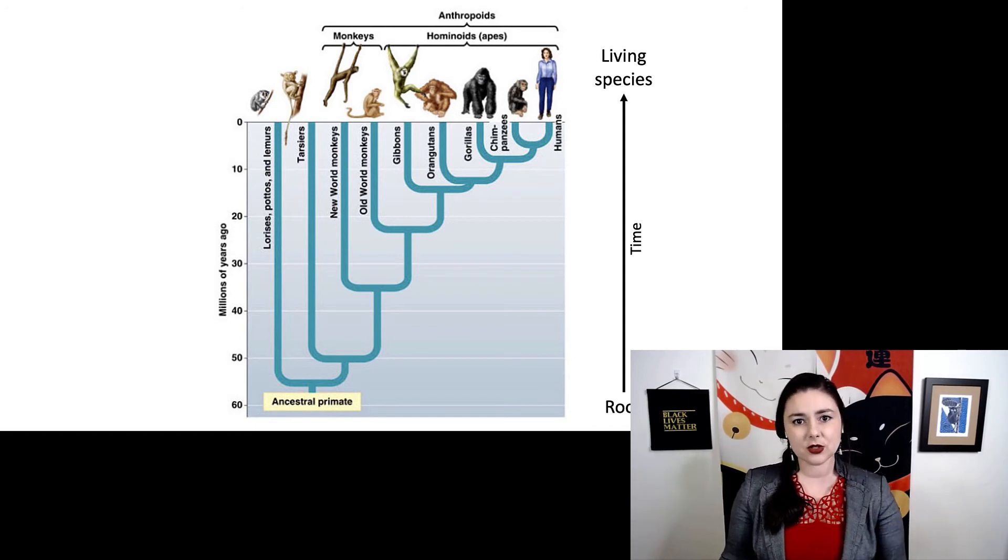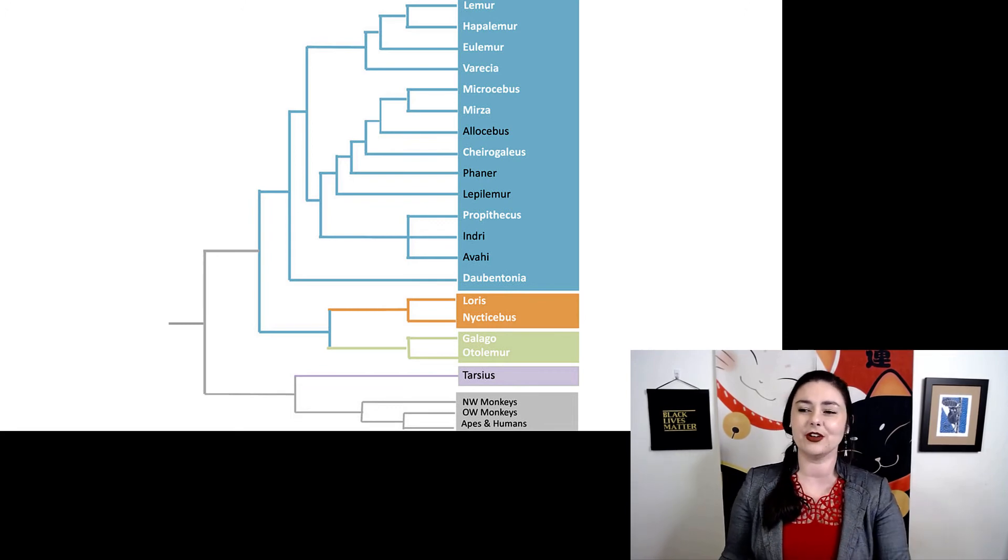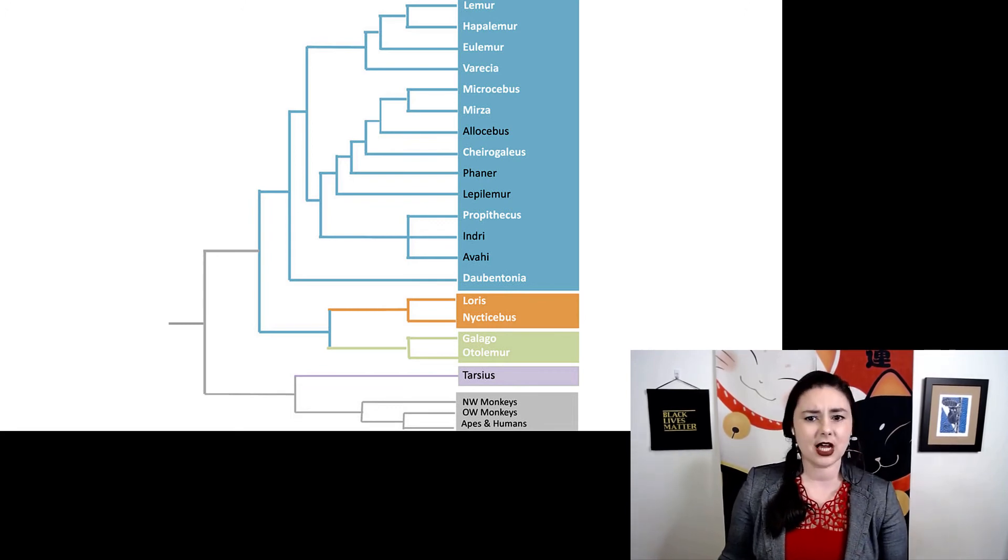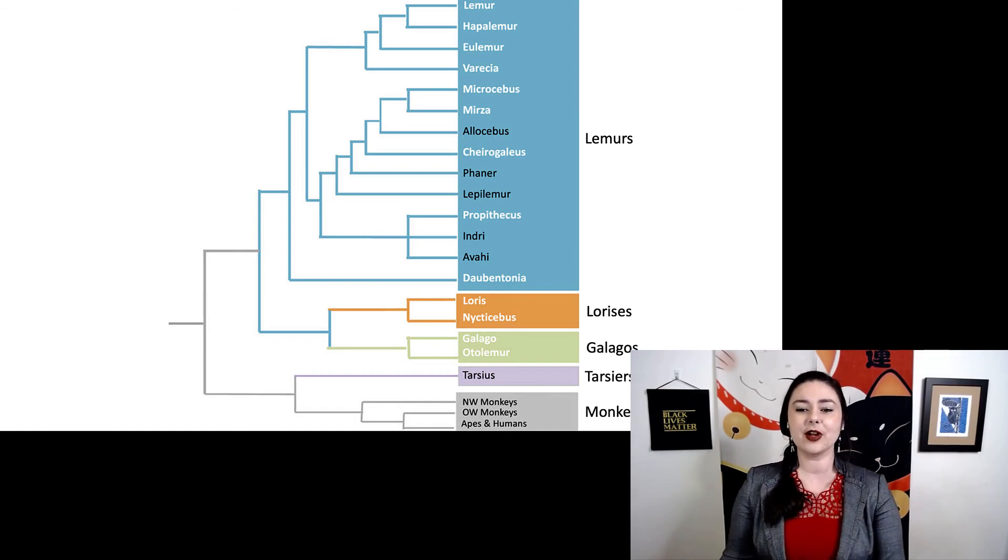So we've been looking at trees with a pretty similar format here. Here's a different example. So again, this is still primates, because we've been talking about them a lot. Let's use familiar examples. I felt it might be helpful to have some more common names here. So these lemurs are in blue, lorises are the ones in orange, this light green is our galagos, tarsiers are in purple, my favorite color, and the gray one at the bottom, those are our monkeys and apes.